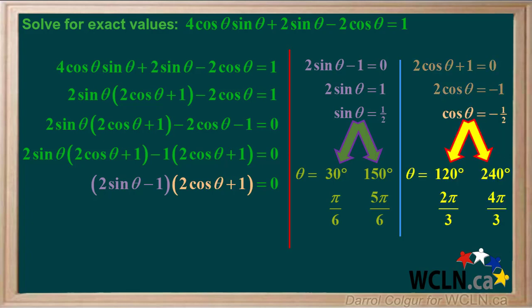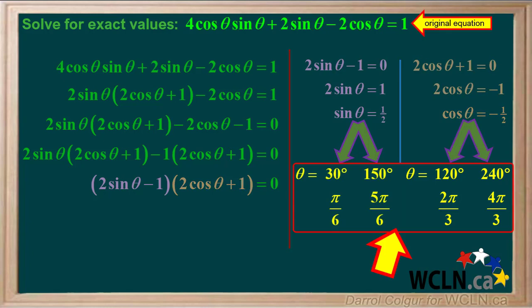Cos theta equals negative 1 half for angles 120 degrees, which is 2 pi over 3 radians, and 240 degrees, which is 4 pi over 3 radians.